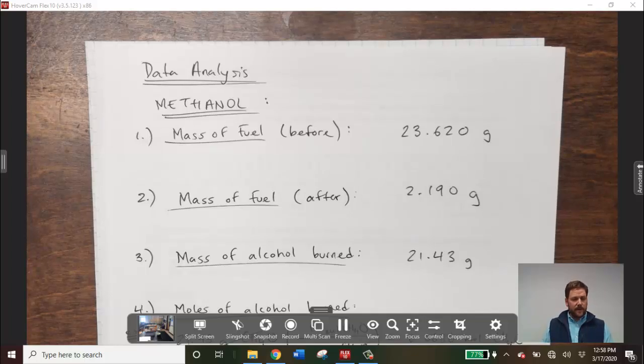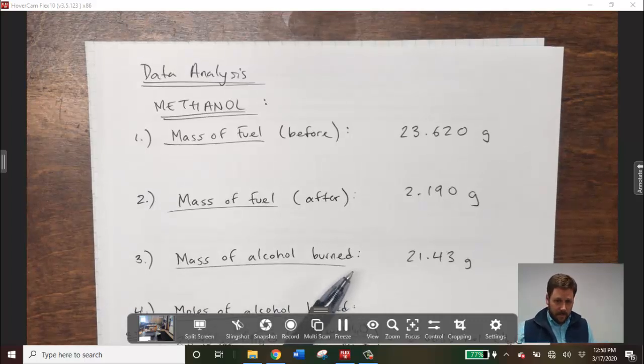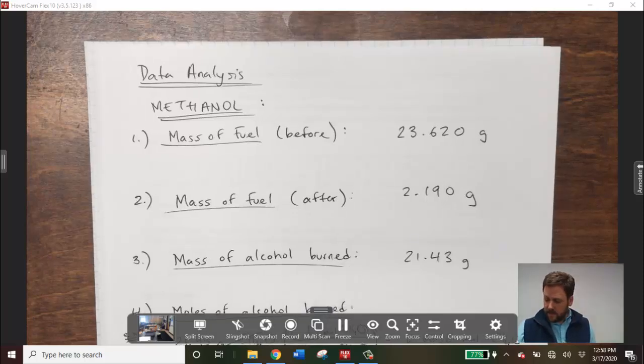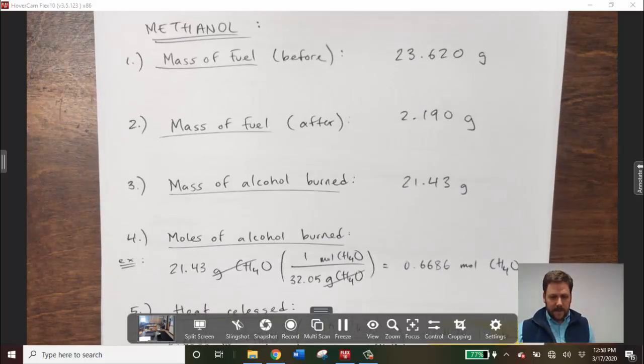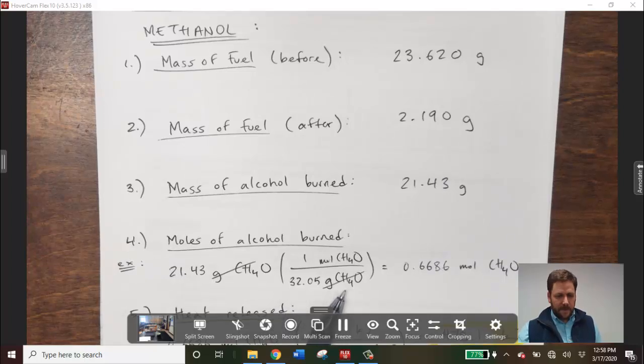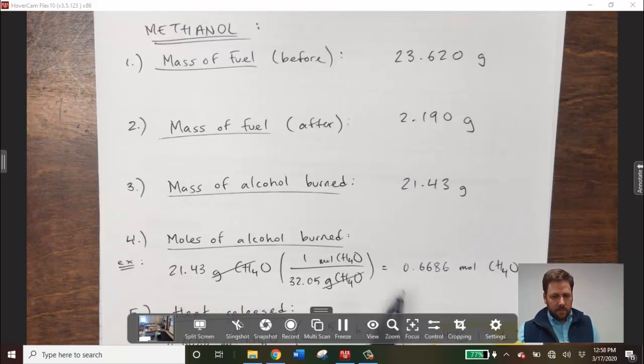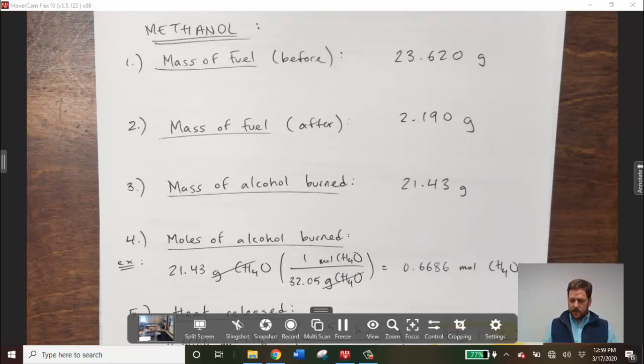Let's finish going through the methanol calculations and see what questions 4, 5, and 6 are all about. Question number 4 is asking for how many moles of alcohol we burn. Notice here the amount of alcohol burned is given in grams, and we want to convert that to moles by using the molar mass of alcohol. The alcohol I should specify in this case is the methanol, not the ethanol. There's the chemical formula for methanol and its molar mass. So I've converted from grams of methanol burned to moles of methanol burned.